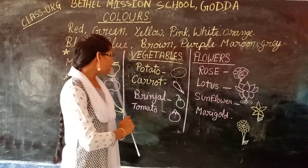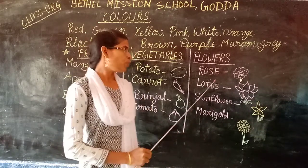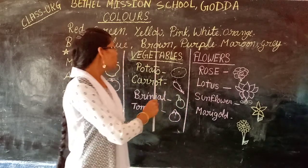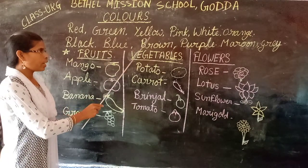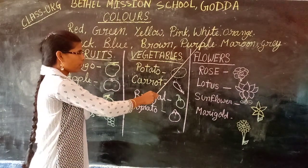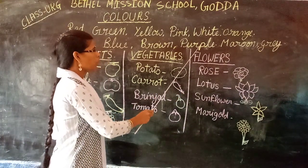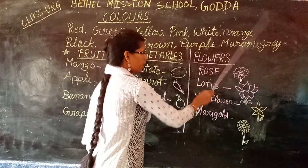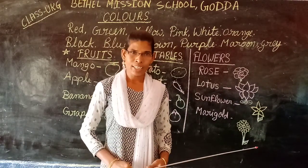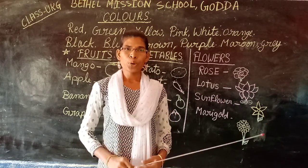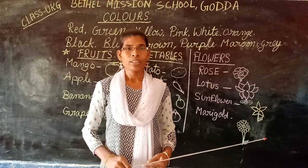So children, now we have learned different color names, fruits, vegetables, and flowers. Now let us read out all these colors: Red. Green. Yellow. Pink. White. Orange. Black. Blue. Brown. Purple. Maroon. Gray. Dear children, now you have to write down all these color names in your copy and draw each one with vegetables, flowers and fruits, and color it. Thank you.